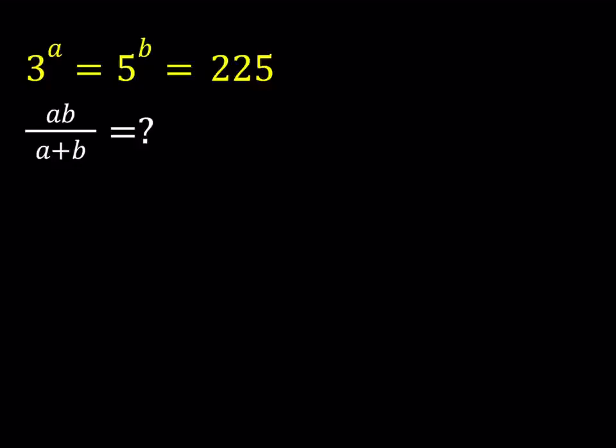Hello everyone. In this video we're going to be solving an exponential system. We have 3 to the power a equals 5 to the power b equals 225, and we are supposed to evaluate the expression ab over a plus b.